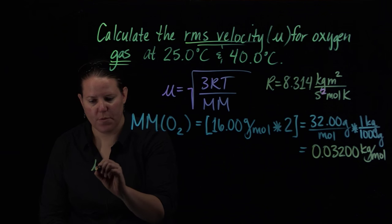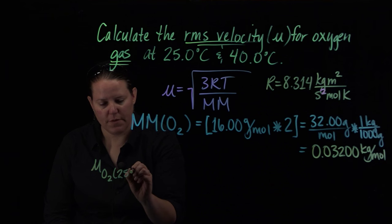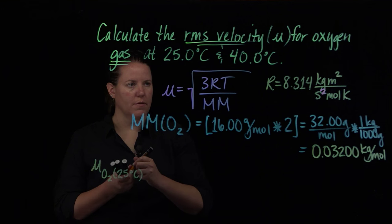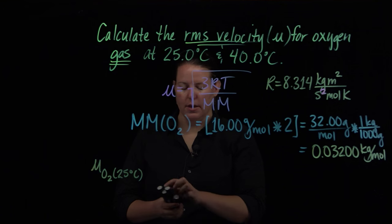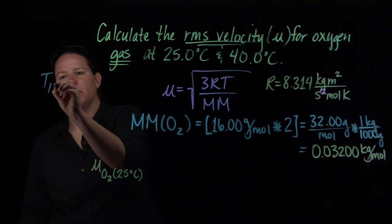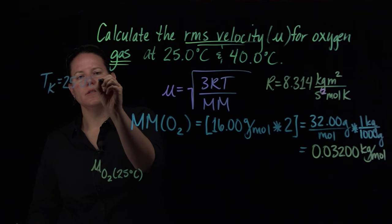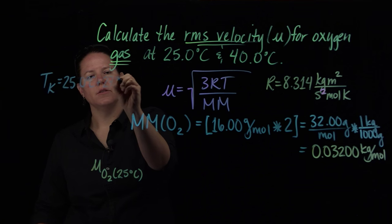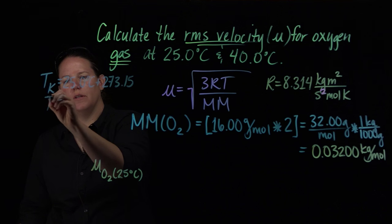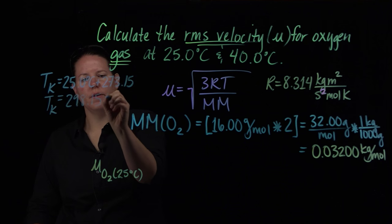Let's plug in our numbers. We have the root mean square velocity of O2 at 25°C. The other thing is that temperature has to be in Kelvin. So let's take a moment and convert our temperatures. The temperature in Kelvin of 25.0°C is just adding 273.15, so this is 298.15 K.